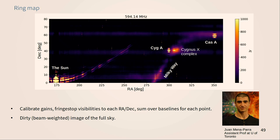Much more recently, Juan — now a professor at Toronto — took this initial dataset after fixing a bunch of bugs and made what we call a ring map, where for each time it beamforms to a range of declinations, giving a picture of the sky sort of unwrapped. We see the sun, reflections of the sun off the dish, the Milky Way plane, Cygnus A, the Cygnus X complex star-forming region, and Cassiopeia A. This is just for one frequency, but progress is underway.